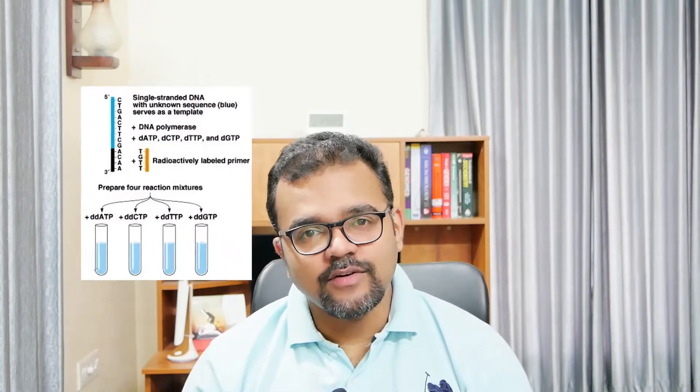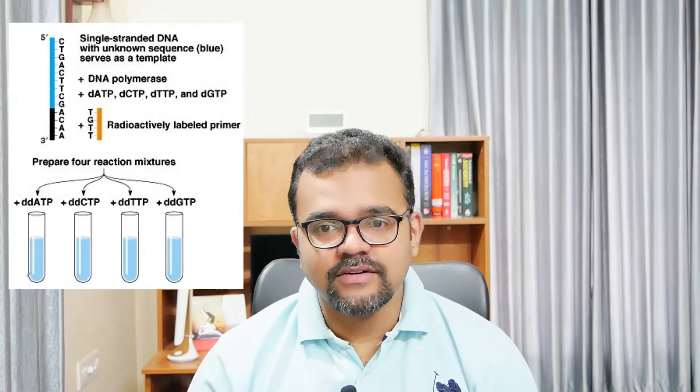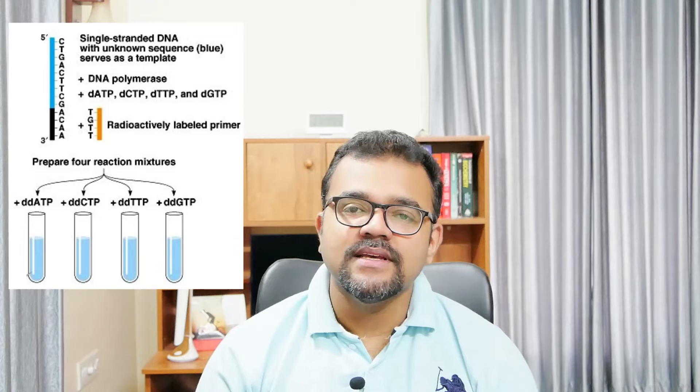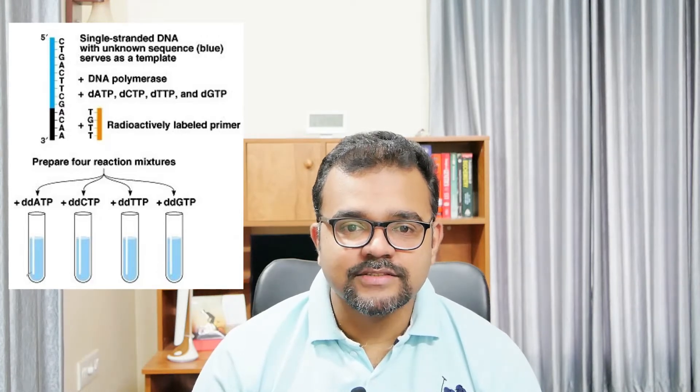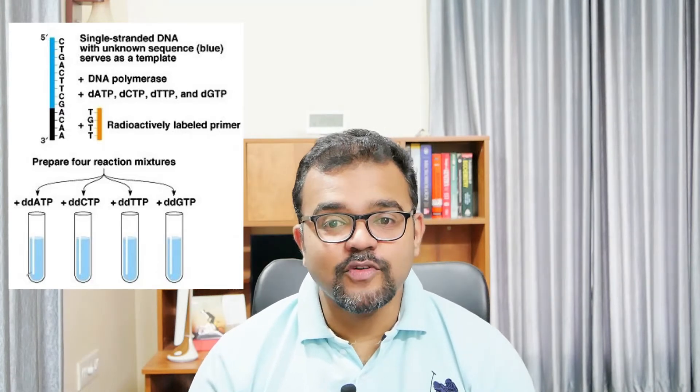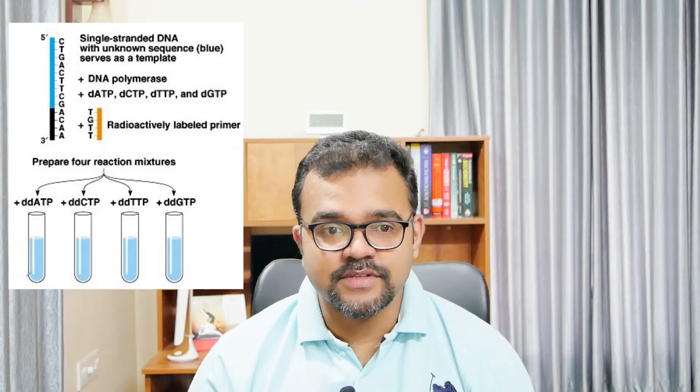As we have discussed earlier, the reactions are carried out in 4 aliquots of small volumes in microfuge tubes or vials, so there have to be 4 vials. The enzymatic synthesis or dideoxynucleotide chain termination method requires 5 major components in each reaction mixture.